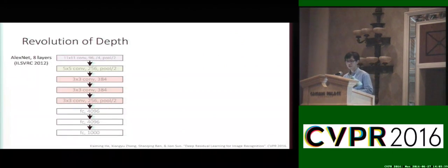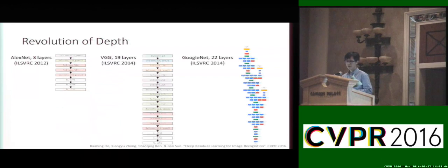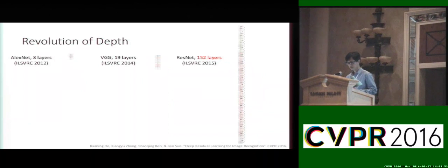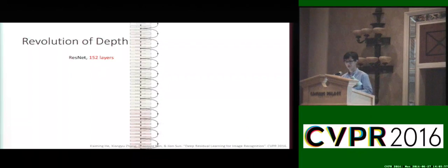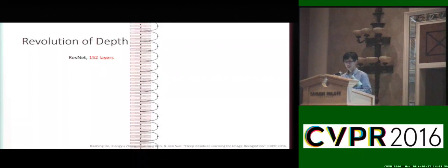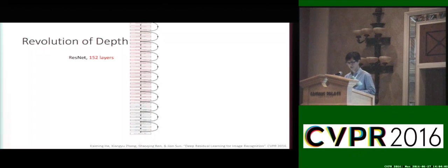Here is how deep learning looked three or four years ago — this is AlexNet with eight layers. Two years ago we had VGGNet and GoogLeNet with about 20 layers. Here is the deep residual network with over 150 layers, and here is another view of this neural network — it is not too special, it is just a lot of layers.